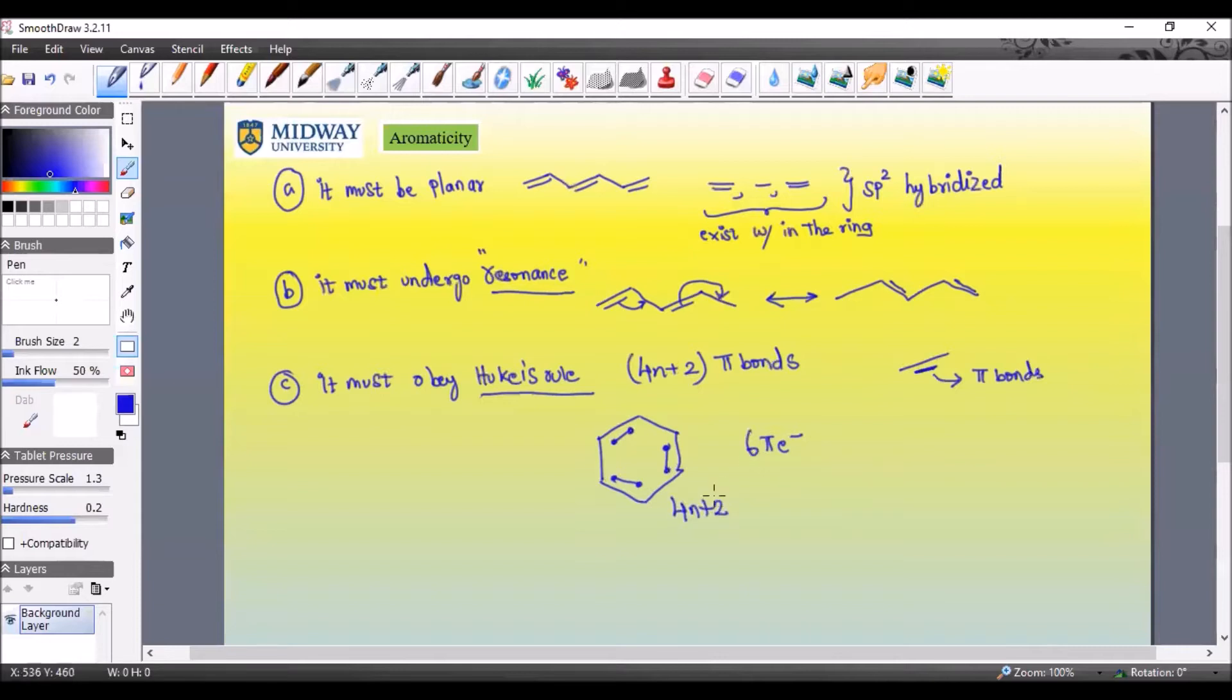Now you must use this formula in a way that you should be able to produce six, and if this formula can never result in six, that means it does not obey Huckel's rule. Now if I put a value of zero for n, then I get just two, right? That's not what I want. What if I put one? That means I get four times one plus two. I'm able to reproduce the six pi, right?